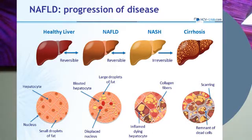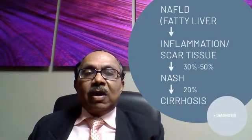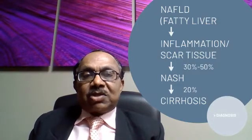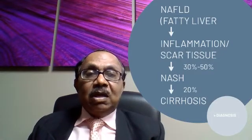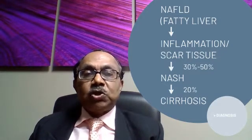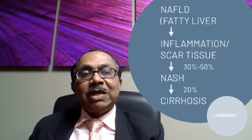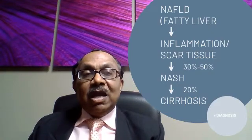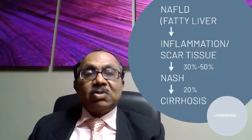People with NASH can also progress to cirrhosis of the liver. A lot of scarring will lead to cirrhosis. A fatty liver or NAFLD can progress to NASH when there's inflammation and scar tissue. This happens 30 to 50 percent of the time. Historically we thought this was a much more benign process, but more and more studies are showing that it can progress to NASH in 30 to 50 percent of cases.